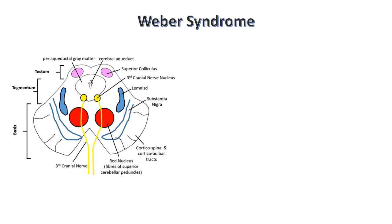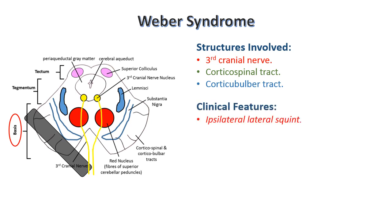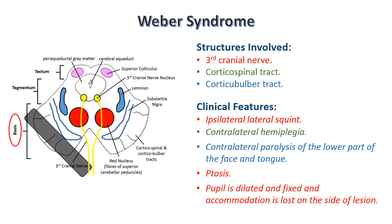First is Weber syndrome. Here the lesion is at the base of the midbrain. So as you can see in the diagram, structures involved will be the 3rd cranial nerve and descending tracts including the corticospinal and corticobulbar tracts. Clinical features will be: ipsilateral lateral squint due to 3rd nerve palsy; contralateral hemiplegia due to involvement of the corticospinal tract; contralateral paralysis of the lower part of the face and tongue due to the corticobulbar tract; ptosis due to paralysis of levator palpebrae superioris supplied by the 3rd cranial nerve; and pupil will be dilated and fixed — accommodation is lost on the same side of the lesion due to involvement of the parasympathetic component of the oculomotor nerve, that is the Edinger-Westphal nucleus.